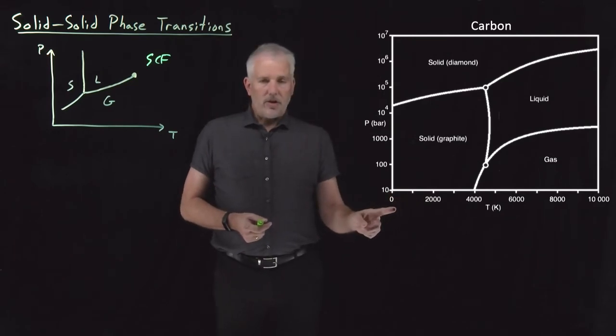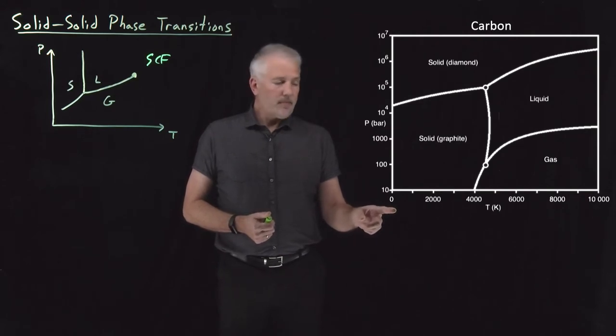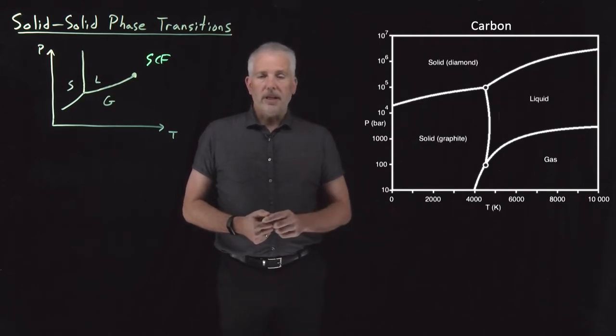As you likely already knew, the most stable phase of carbon at room temperature and room pressure is graphite. That's the phase with the lowest free energy.